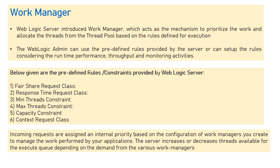The different kinds of rules and constraints you can define with Work Manager include: fair share request class, response time request class, minimum thread constraint, maximum thread constraint, capacity constraint, and context request class. These are the different kinds of Work Manager configurations you can define based on your application requirements.